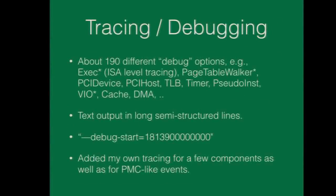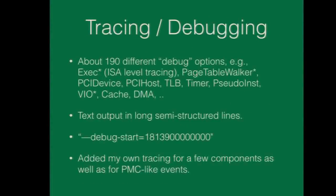How do you debug all these problems? Because you're dealing with this monster, which is normally your CPU. GEM5 has a lot of debugging options you can turn on individually for what you need, which is extremely helpful. It's also extremely helpful if you want to later get an ISA-level trace of all your instructions while doing software analysis, or if you want to see what your caches are doing.